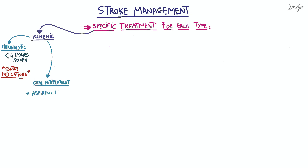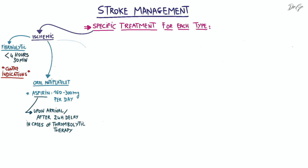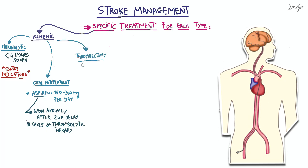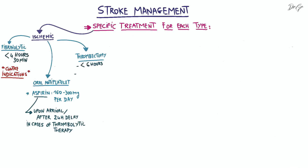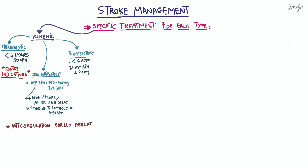Oral antiplatelet therapy with aspirin is prescribed at a dose of 160 to 300 mg per day. Aspirin is initiated upon arrival, or after a 24-hour delay in cases where thrombolytic therapy is performed. If thrombolytic therapy is not possible, thrombectomy may be considered if the duration since symptom onset is less than 6 hours. Alternatively, intravenous aspirin at a dose of 250 mg can be administered. Anticoagulation is rarely indicated in ischemic stroke, and it is crucial to avoid converting an ischemic stroke into a hemorrhagic one.